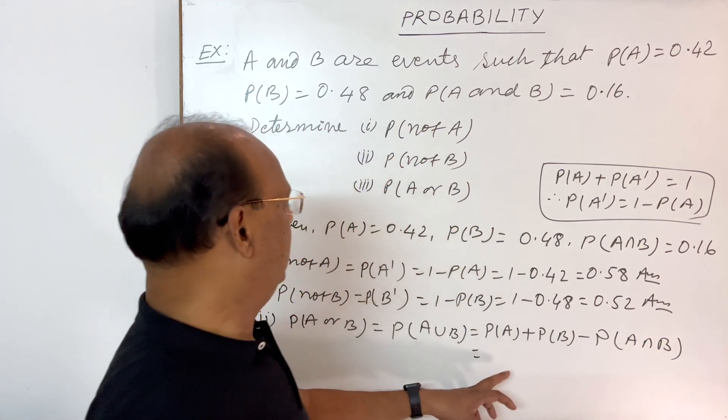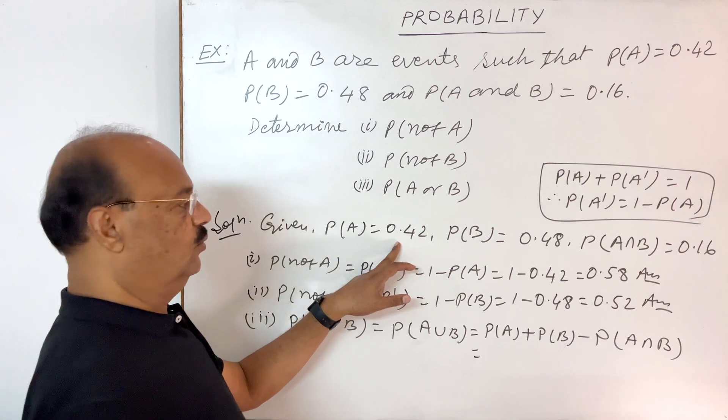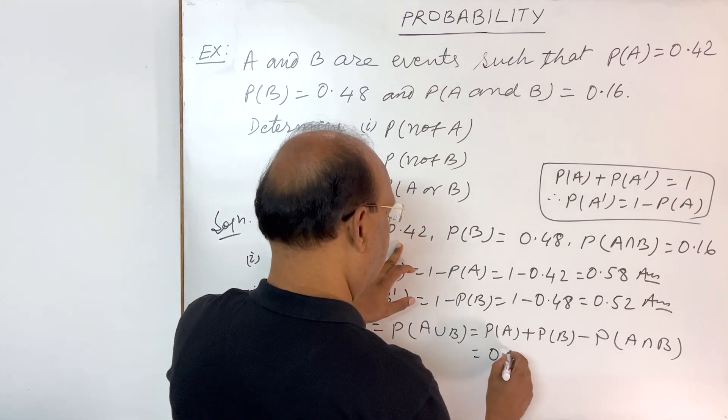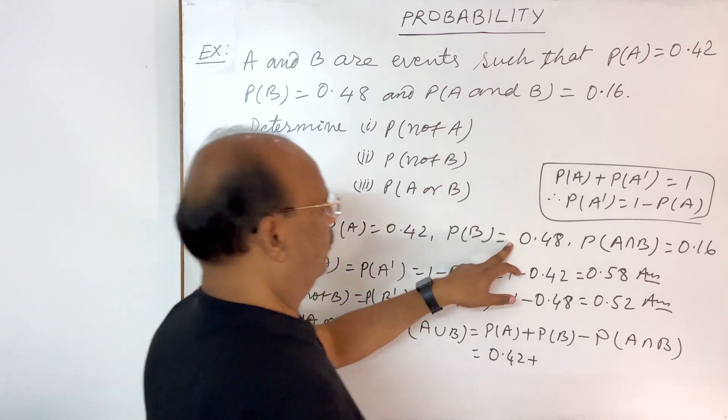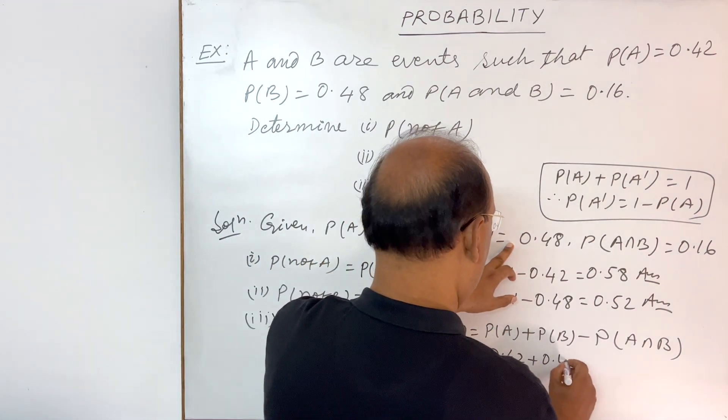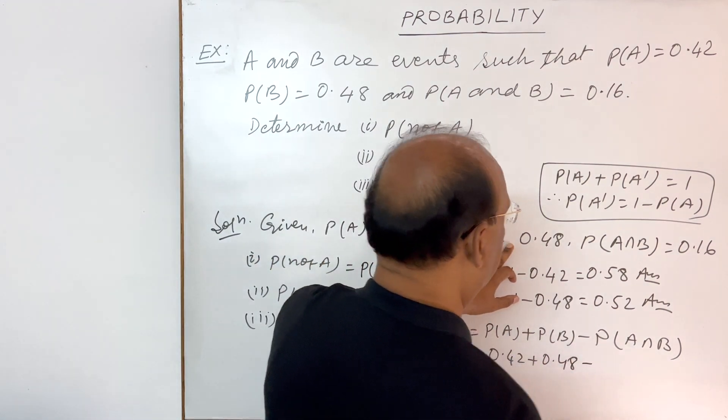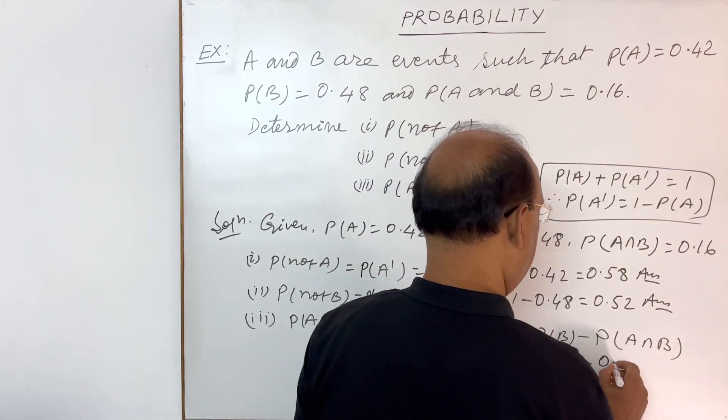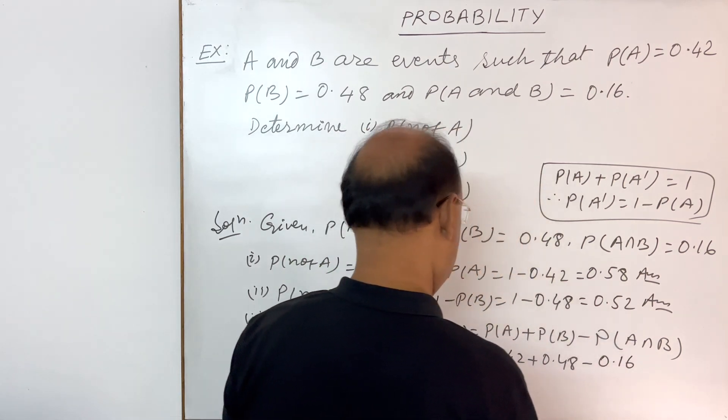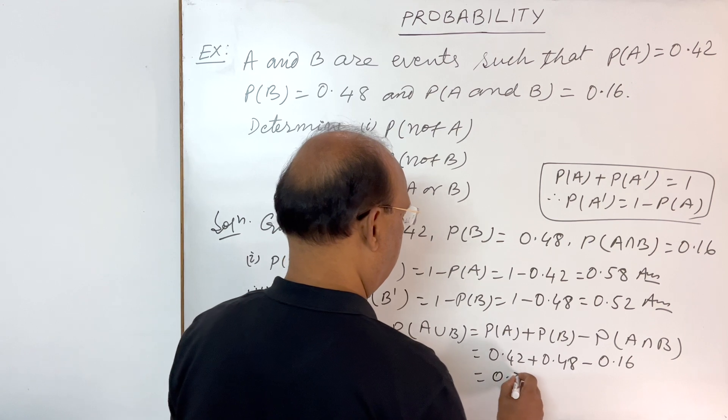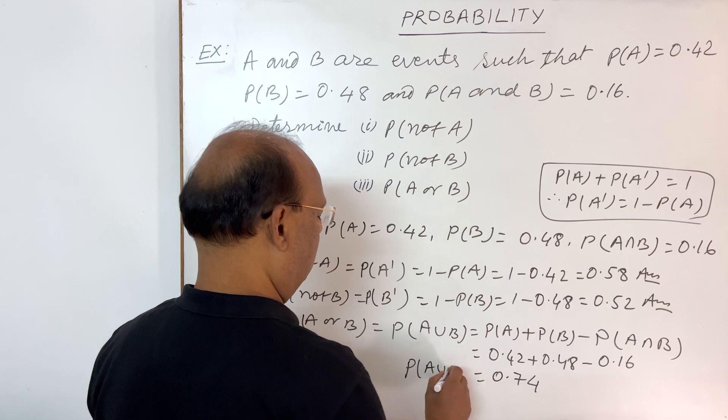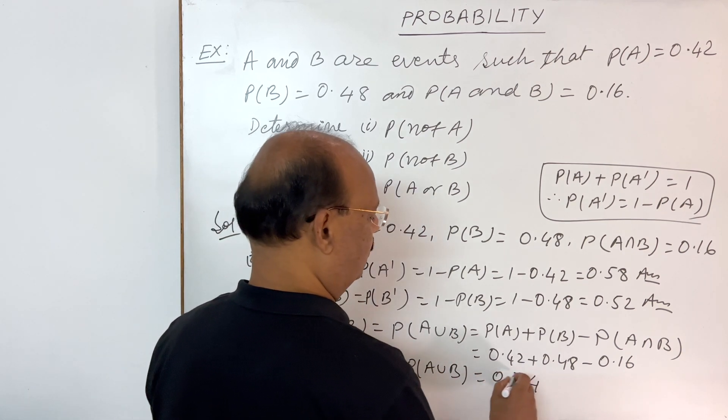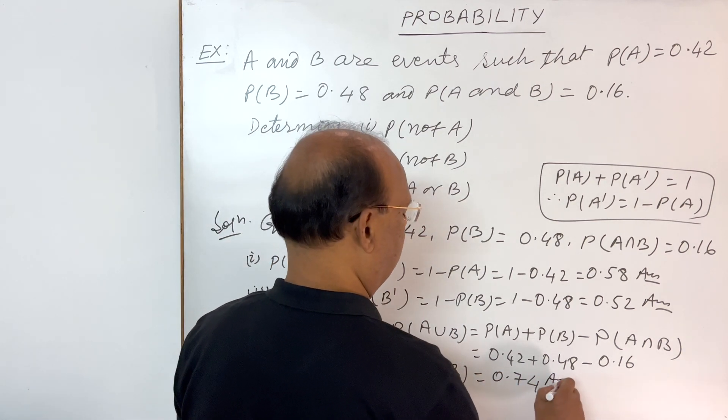So let us put these values here. Probability of A is 0.42, probability of B is 0.48, 0.48 minus 0.16. This is going to 0.74. So this is the value of probability of A union B. 0.74 is the answer.